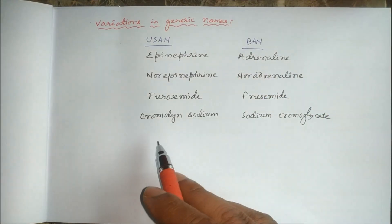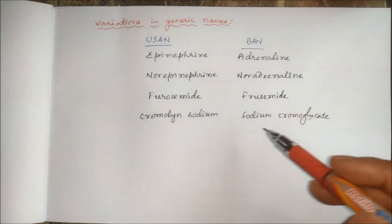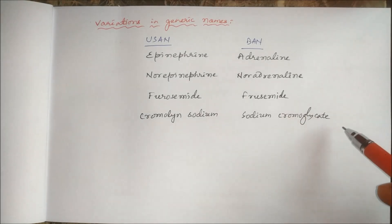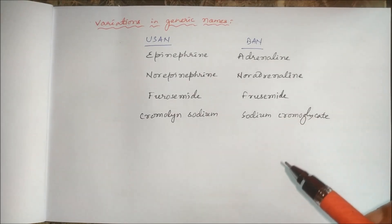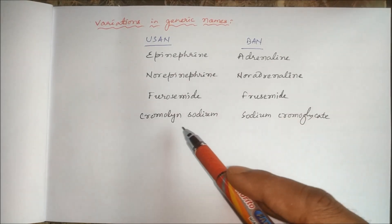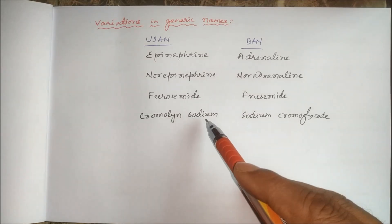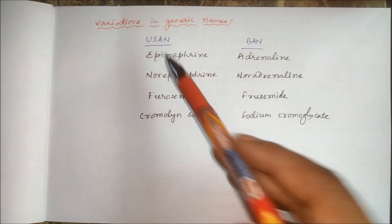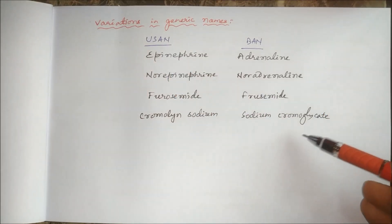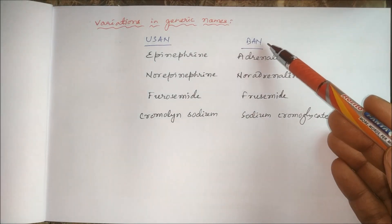Let us take another example: chromolin sodium and sodium chromoglycate. Both are the same molecule used in asthma. Chromolin sodium is given by USAN, and sodium chromoglycate is given by BAN.